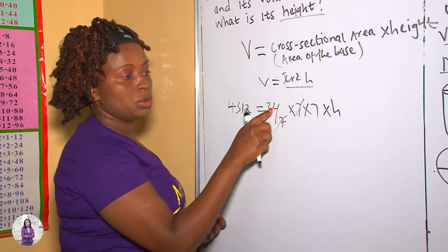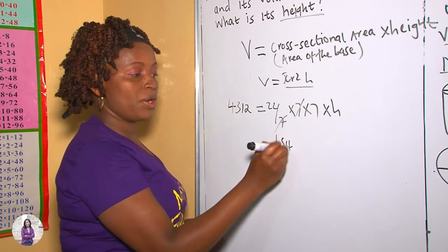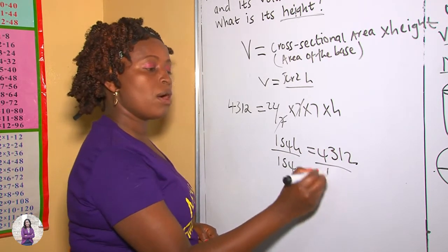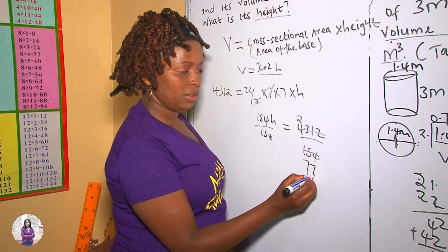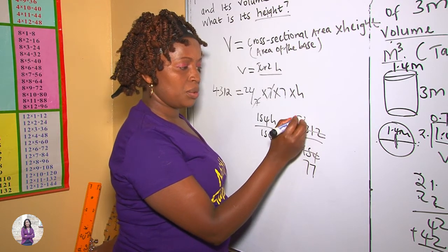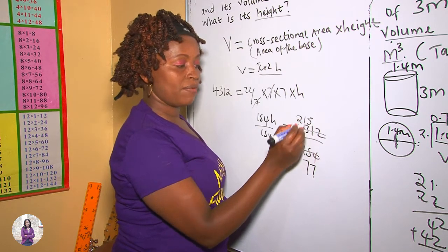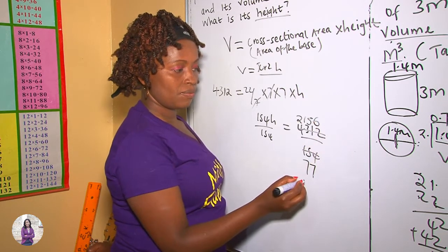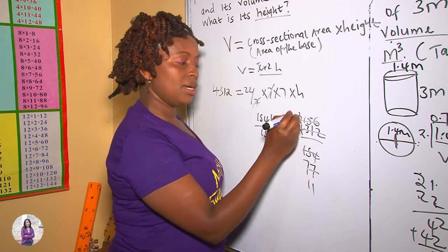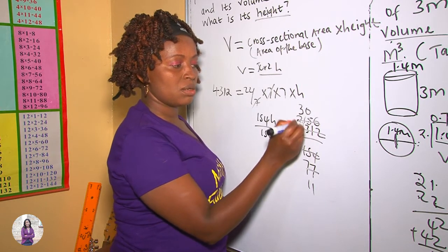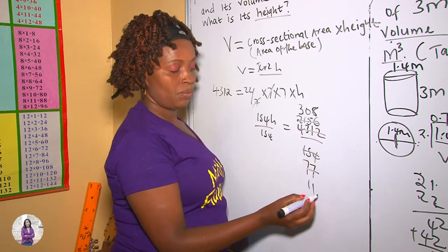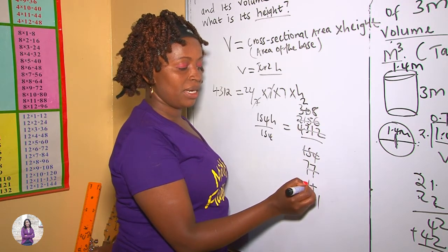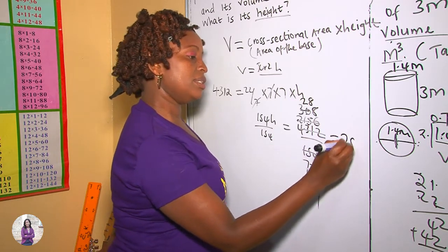Therefore we cross-multiply. 22 over 7 times 7 times 7 gives us 154, so we have 154h equal to 4,312. We want h, so we divide both sides by 154. Working through the division, the answer is 28 centimeters.